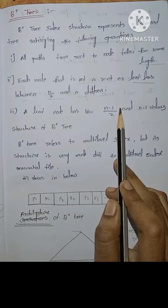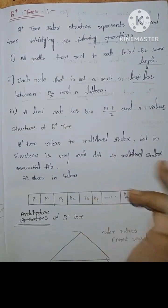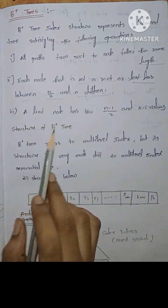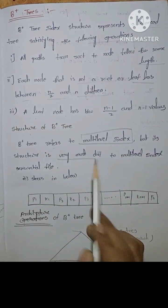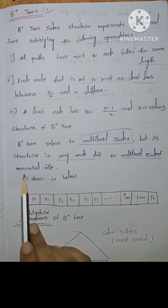A leaf node has between n minus 1 by 2 and n minus 1 values. Structure of B plus tree refers to multi-level index, but its structure is very much different to the multi-level index sequential file.